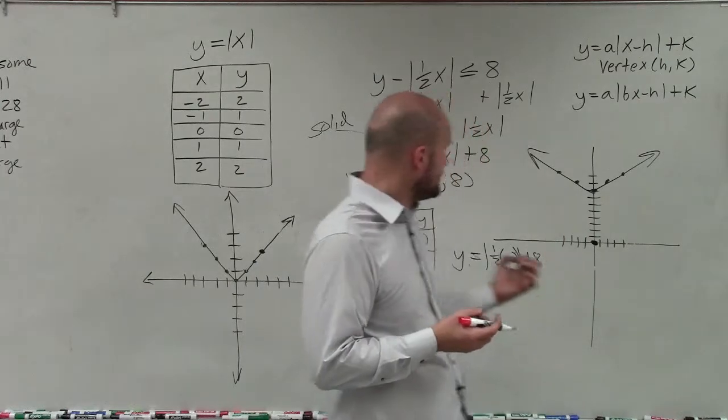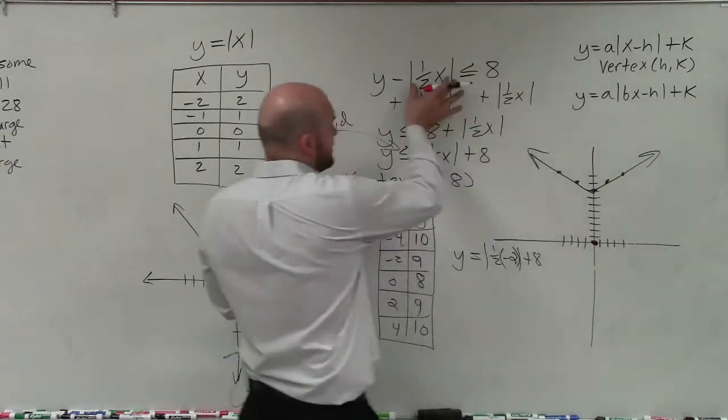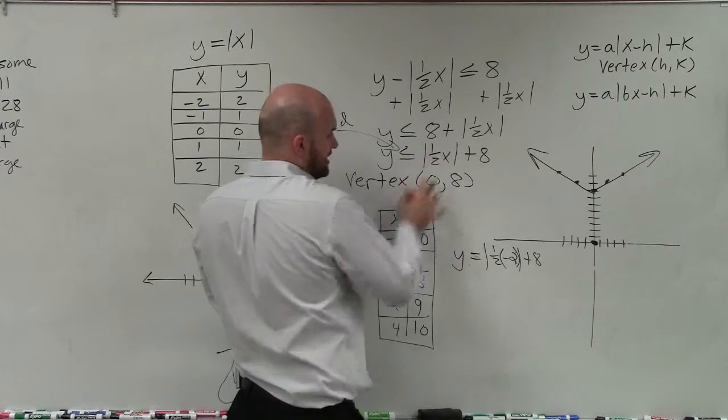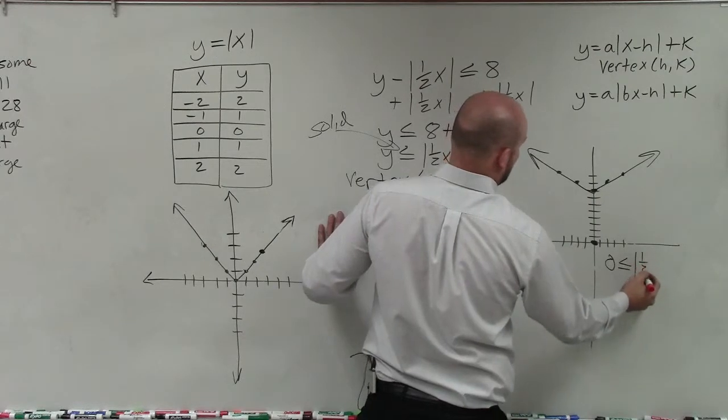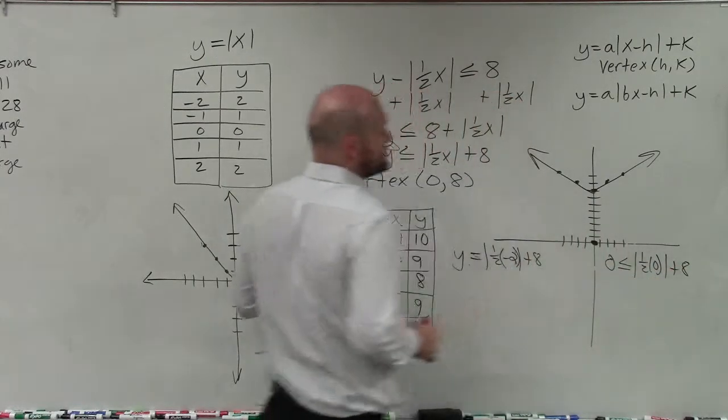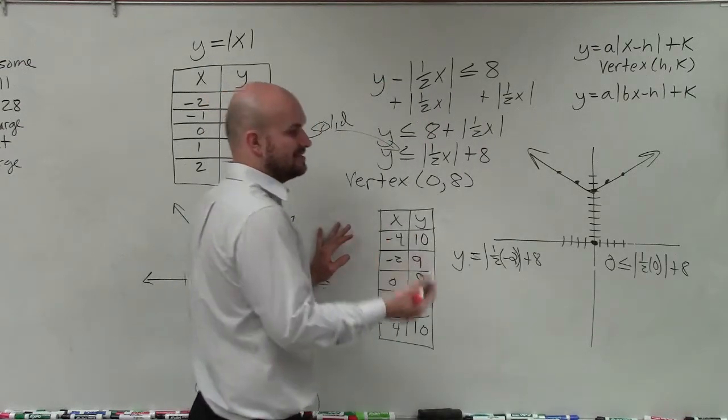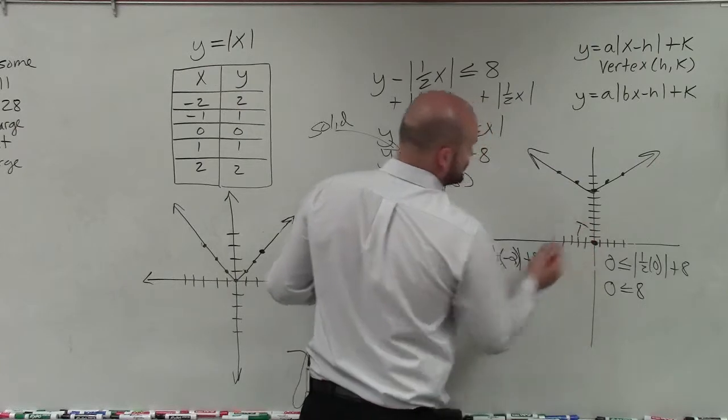So to use 0,0 as our test point, I'm going to plug in 0,0 into our inequality. So I have 0 is less than or equal to absolute value of 1½ times 0 plus 8. 0 times 1½ is 0, absolute value of 0 is 0 plus 8. So 0 is less than or equal to 8. That is true.